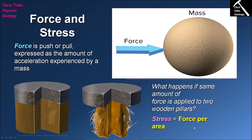This brings us to the idea of stress. Stress is simply a measure of the force being applied to a set unit area — and that unit area could be a square centimetre, a square metre, or a square kilometre. Because we have a much smaller surface area to which the force is applied, this can cause the stress to exceed the strength of our wooden pillar, leading it to deform by flexing or through brittle failure — it can end up breaking. So stress is simply a measure of the amount of force being applied over a set unit area.